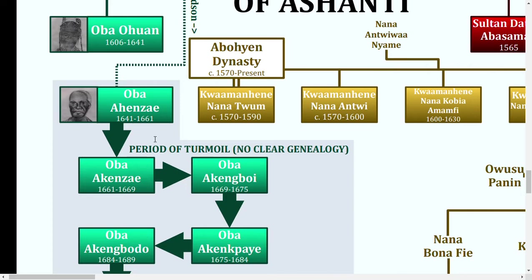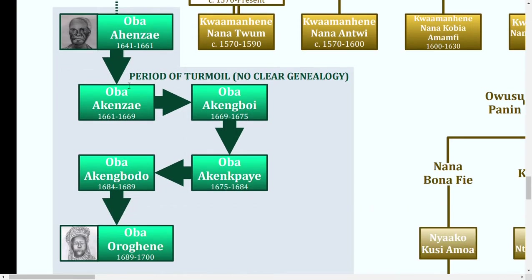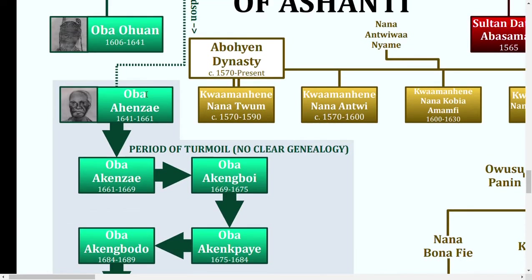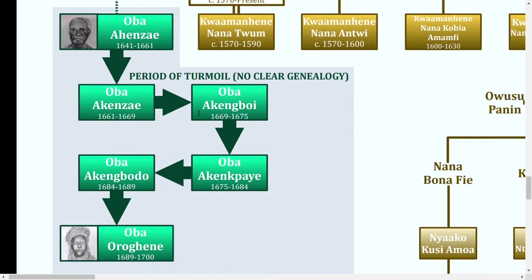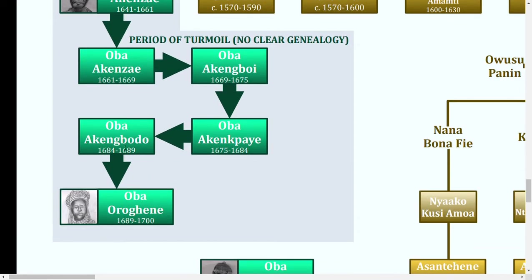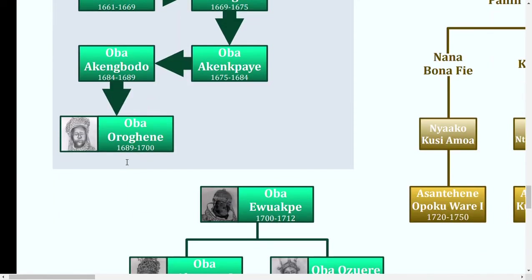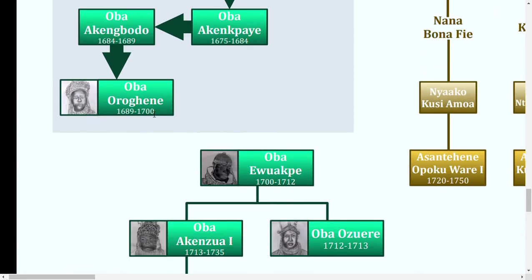Ahenzai kind of started a little period of turmoil. This period also had no clear genealogy — all the sources I looked at had no record at all for the relations between these people. They all had very short reigns: there were six of them in only a 60-year time span. So Ahenzai passed it to Akenzai, who passed it to Akenboi, to Akenkpae, to Akenbodo, and finally to Orhagene, who died in 1700.